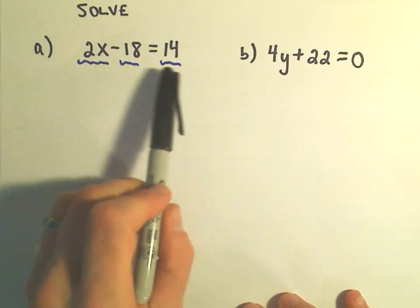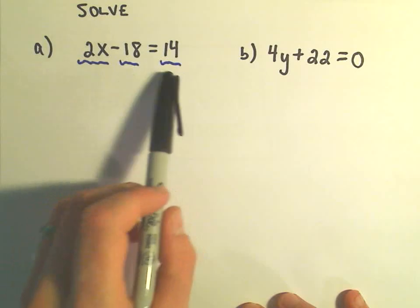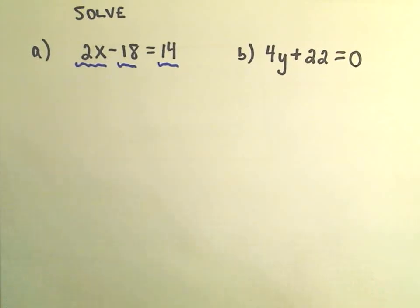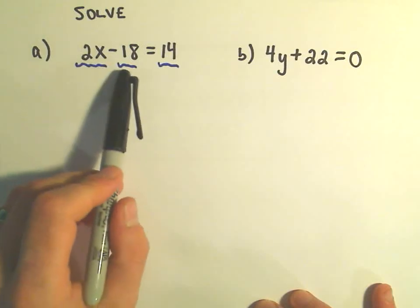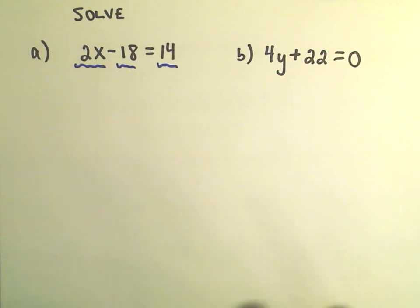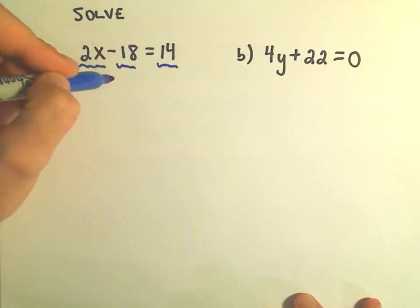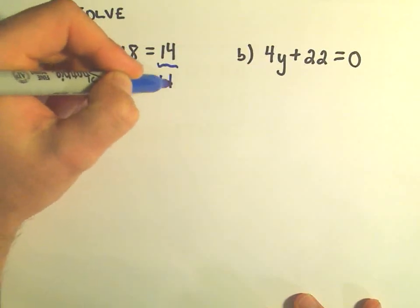To move terms to either side of the equation, you either just add them or subtract them. I want to get the 2x by itself. There's a minus 18 hanging out over there with him and I don't want the minus 18 to be over there. Well, to undo that, since I'm subtracting 18, I can add 18 to both sides.